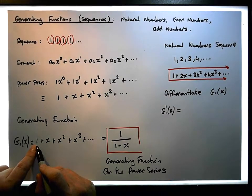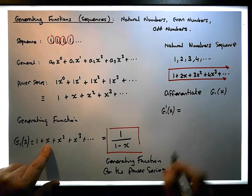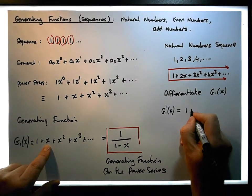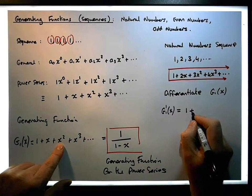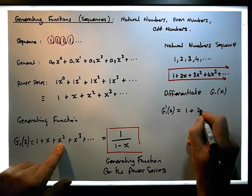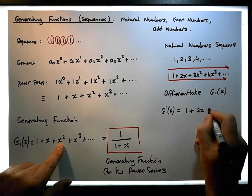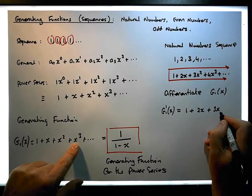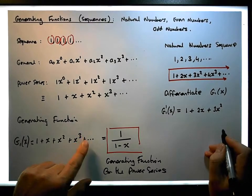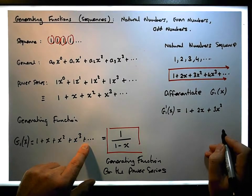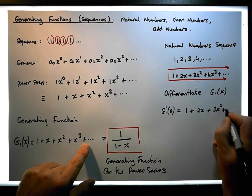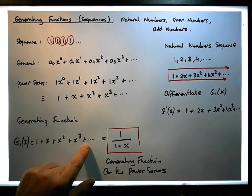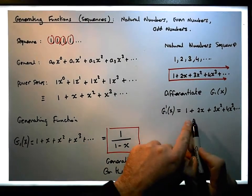The derivative of the constant 1 is just zero. The derivative of x is 1. The derivative of x squared is 2x. The derivative of x cubed is 3x squared. The derivative of x to the 4 is 4x cubed, and so on and so forth.